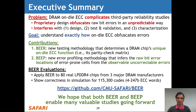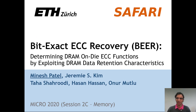To summarize: the problem we tackle is that DRAM on-die ECC complicates third-party reliability studies. Our goal is to understand exactly how on-die ECC obfuscates errors. We introduce BEER, a new testing methodology that determines a DRAM chip's unique on-die ECC function — its parity check matrix — and BEEP, a new error profiling methodology that infers raw bit error locations from only the observable uncorrectable errors. We evaluate BEER in both experiment and simulation to show its effectiveness and practicality, and we open source our implementation on GitHub. We hope that both BEER and BEEP enable many valuable studies going forward. Thank you, and please take a look at our full paper.